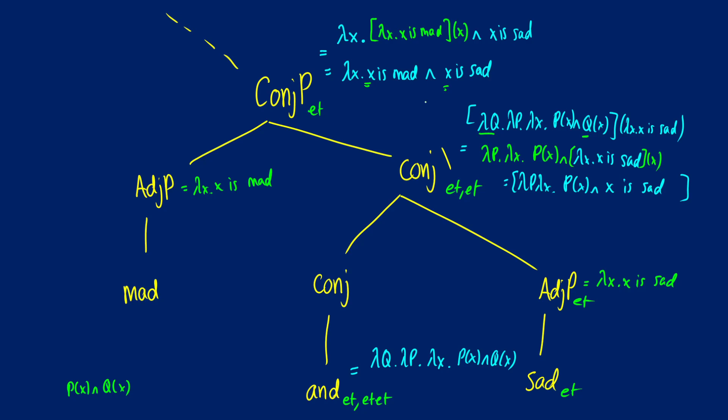As we continue to move up the tree, when we get something like 'Karen is mad and sad,' it's going to be true if and only if Karen is mad and Karen is sad — because that subject gets input right into the subject position X. Those are the two different types of conjunction. It's important to know that the 'and' that is predicational is completely different from the 'and' that is propositional. They have different types, different behaviors, different requirements in the sentence, and they perform different things. In terms of semantics, do not get them confused.